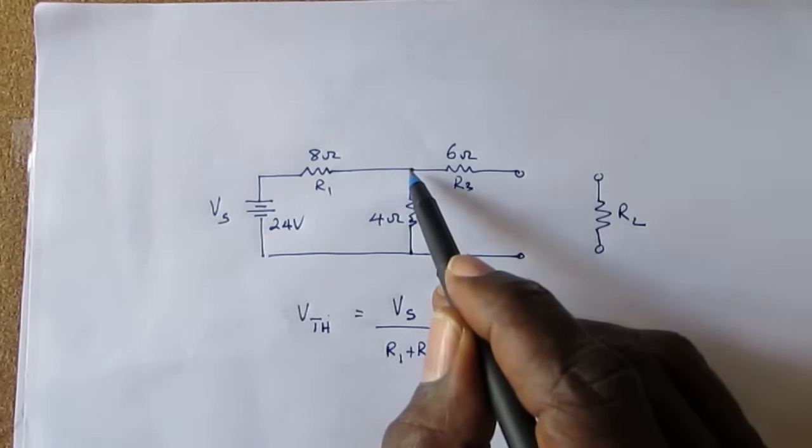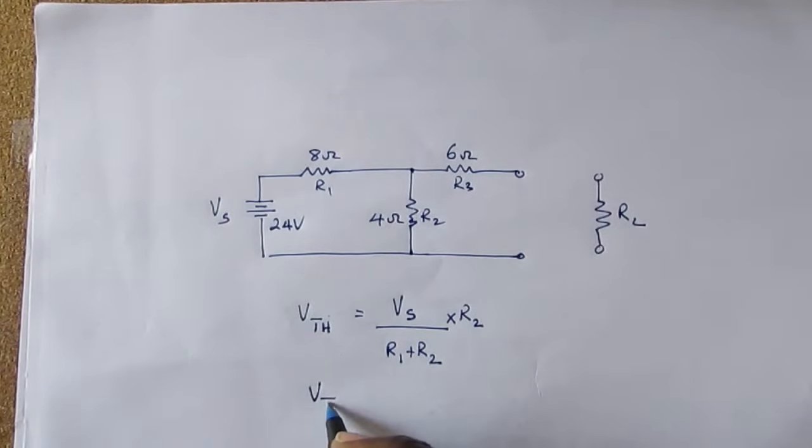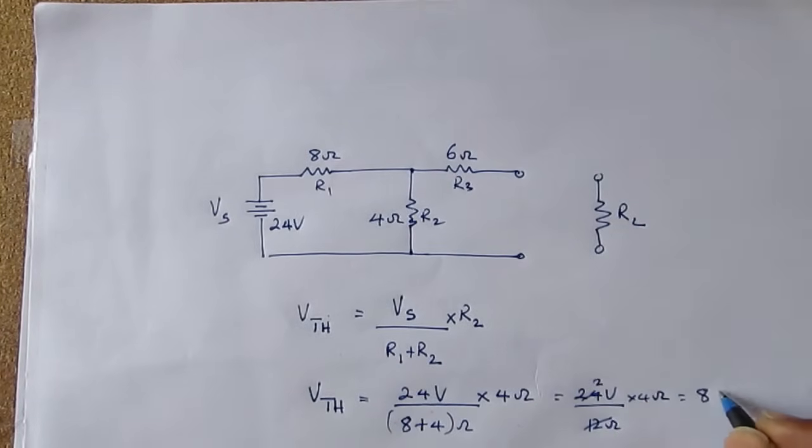So calculating Thevenin voltage: V Thevenin equals 24 volts divided by 8 plus 4 ohms, multiplied by 4 ohms. That gives 24 volts divided by 12 ohms times 4 ohms equals 12, 12 into 24, 2 by 4 equals 8 volts. So the voltage is 8 volts.